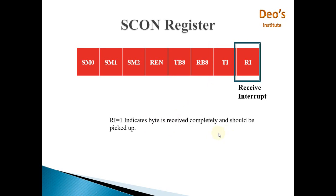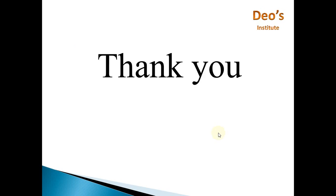Last is the Receive Interrupt Flag (RI). When the RXD pin receives 8-bit data, that data is stored in SBUFF. When all 8 bits are received completely, the RI flag is set to 1 to indicate that the data is ready to be picked up. It should be picked up by the application before it is overwritten. This is all about the SCON register.